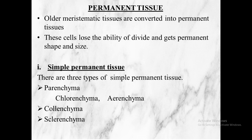The third type is sclerenchyma — it is made up of only one type of cell. These cells have thick and tough secondary walls made up of lignin, which provides hardness to the cell. Because of lignin, the cells are more strong and tough. For example, the husk or outer covering of coconut is made up of sclerenchyma.